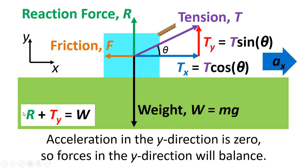So the reaction force plus the tension in the rope in the y-axis will equal the weight. The reaction force is going upwards. Tension in the rope going upwards for Ty. Those added together will be balanced out by the weight.